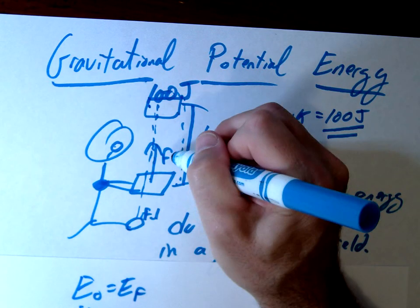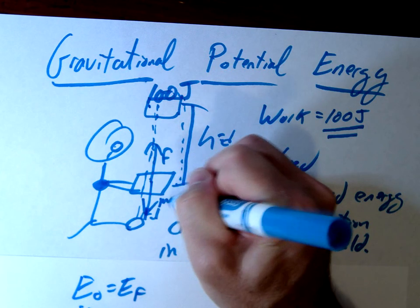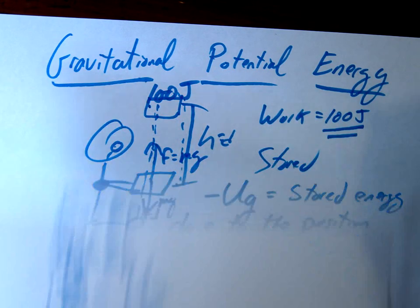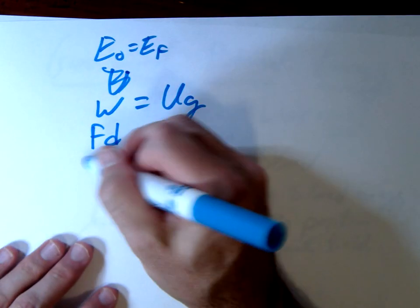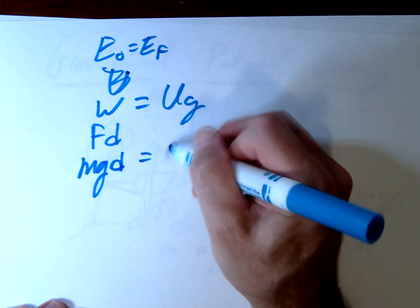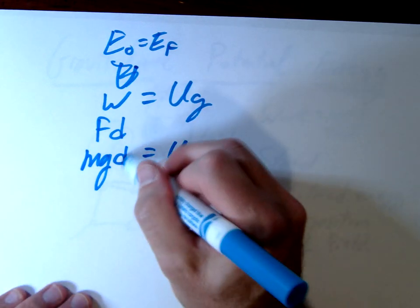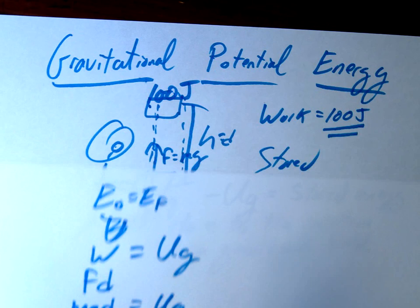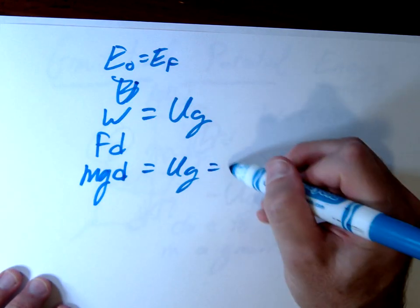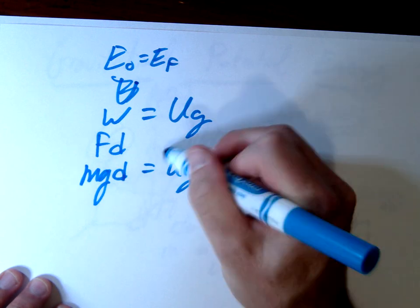Well, work is force times distance. In this case, I'm applying a force upward, right, the weight's pulling back down, so my force must be exactly equal to that weight. I'm lifting the weight. So this would be Mg times D equals Ug. Now we typically, instead of using a D, the symbol D, we use the symbol of H. So I'm just going to go ahead and write that as Mgh here.